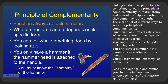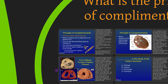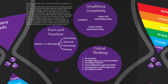Linking anatomy to physiology is the principle of complementarity — anatomy and physiology help each other out; they complement one another. Function always reflects structure; what a structure can do depends on its specific form. You can tell what something does by looking at it. You only have a hammer if the hammer head is attached to the handle, so you must know the anatomy to know the function. Relating anatomy to physiology is one of the mastery skills in this class — the principle of complementarity, or form and function — and we'll extend it from physiology to clinical testing, clinical care, pharmacology, and pathology.